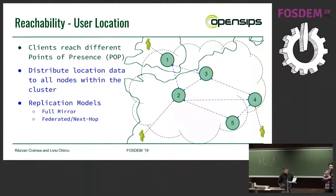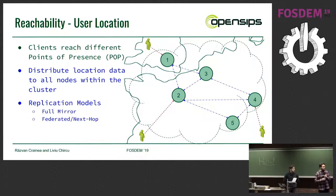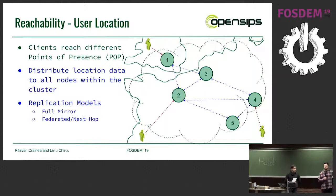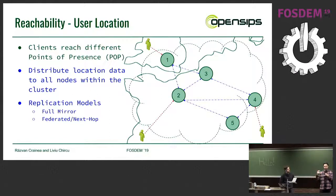There are a couple of models for this. We can have a full mirror where all nodes share the entire location data — but in practice this isn't very useful because clients are typically behind NAT, so node one still can't reach the user in France directly. Another model is federated, where each node has its own set of users and all a node needs to know is on which node a user is registered, then use that node's information.